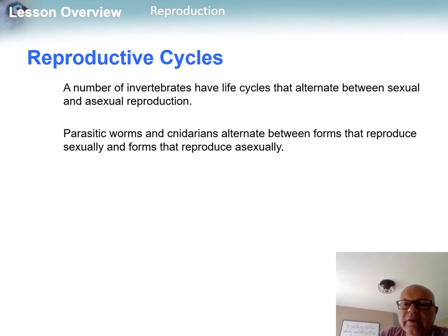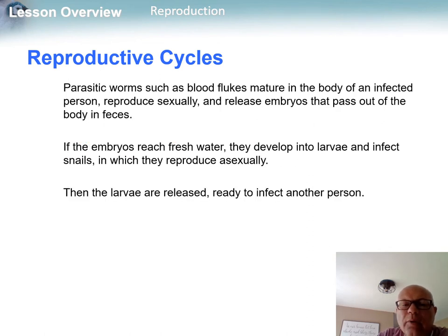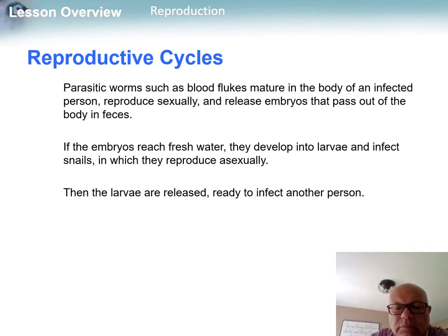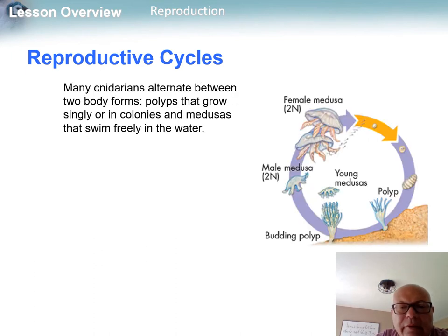We also have invertebrates that alternate their life cycle between sexual and asexual reproduction. You'll see this in parasitic worms and cnidarians, which will go back and forth. An example here is a fluke.